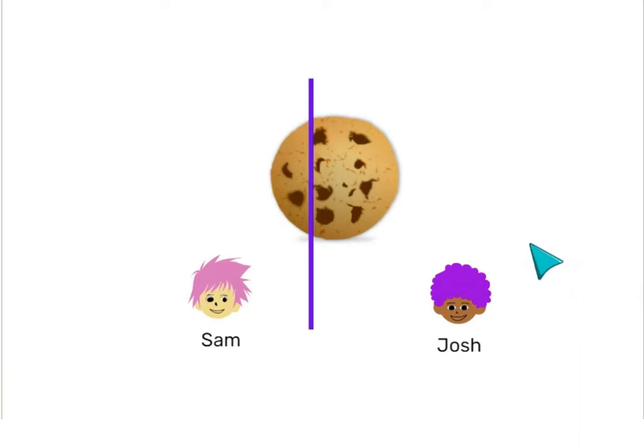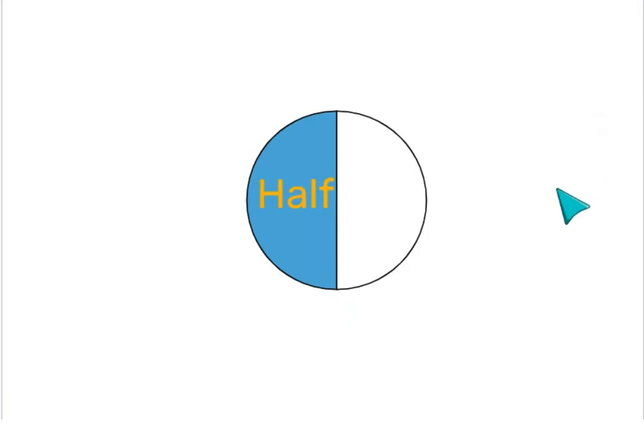The only way to make sure they get a fair share is to split the cookie right down the middle, making sure each boy gets a same sized piece. That's what half means after all. It means that one whole thing is being split into two equal parts.